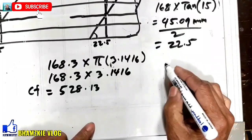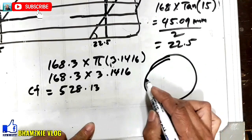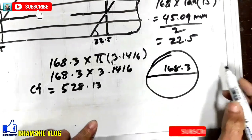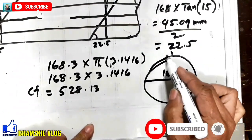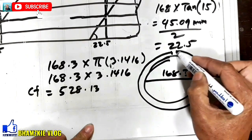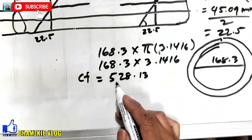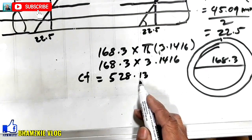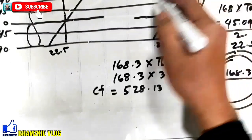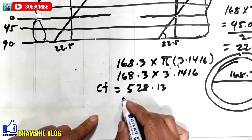Yung ating circumference, halimbawa, ito yung ating pipe. Yung ating outside diameter is 168.3. Yung circumference nya, simula rito hanggang dyan yung paikot na yan, yan yung kanyang circumference. So, yung total nyan pagka ilatag nyo is 528.13. Yan yung circumference. So, para makuha ninyong bawat distance dito ng inyong mga line degree dito, yung 528 i-divide 2 nyo lang yan.